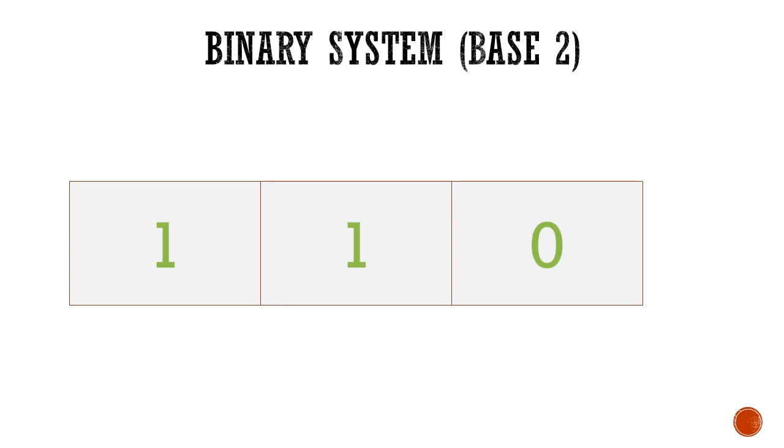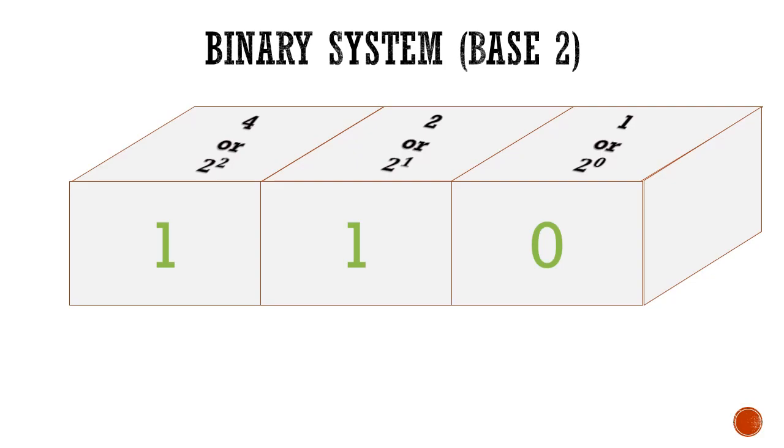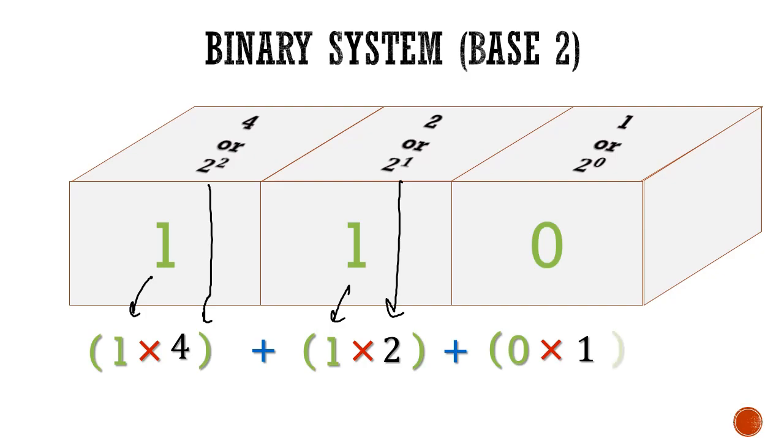Now let's see what happens in binary system which is base 2 system. If we have a number 1 1 0 and I want to expand it and express it in decimal form, I will use the powers of 2. This will be written as 1 times 2 squared which is 4 plus 1 times 2 raised to power 1 which is 2 plus 0 times 2 raised to power 0 which is 1. If I simplify it, I will get 6 in decimal system.